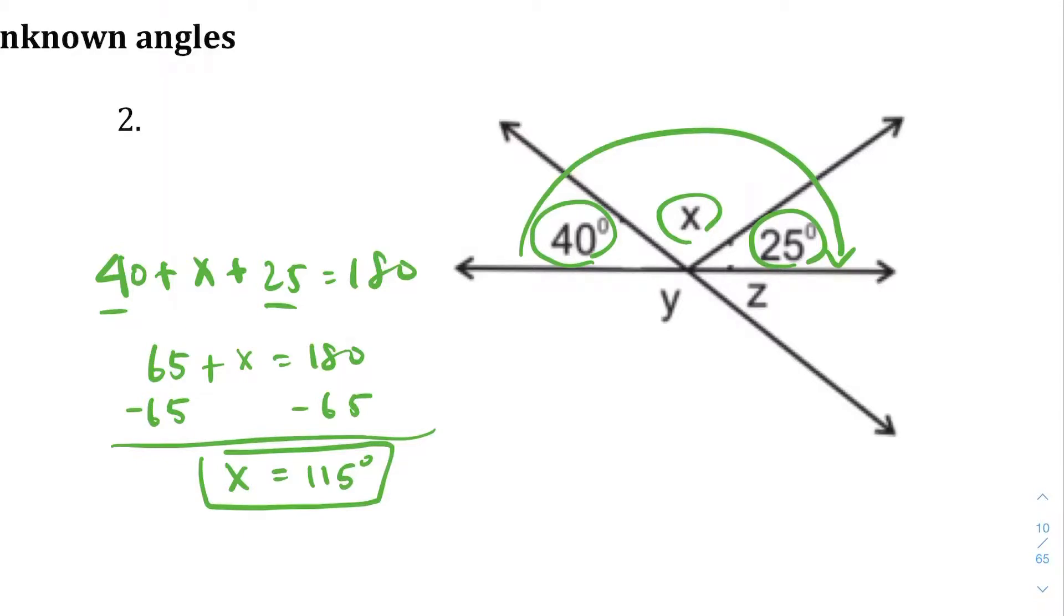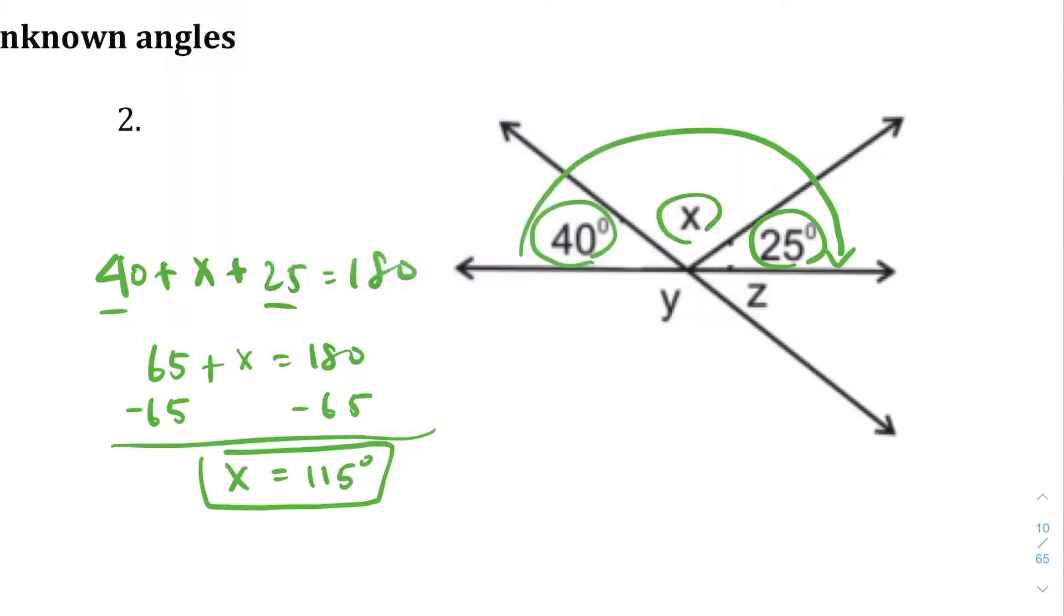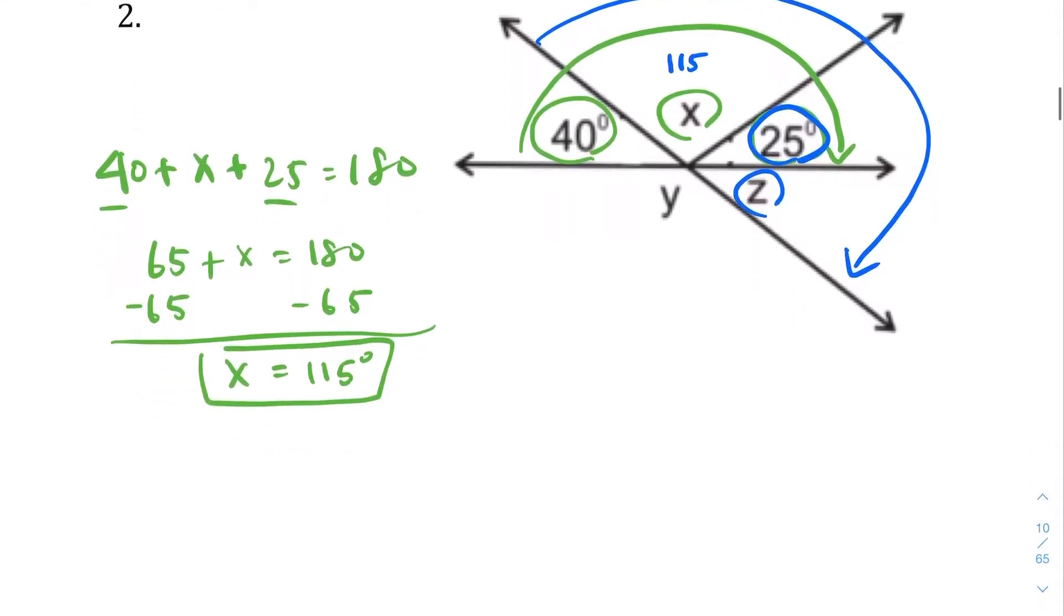Now that we know what x equals, let me change color here. We can find out what z equals. Since x is 115, this is 25, and z is what we're trying to find. Let's set up another equation. 115 + 25 + z is going to also equal 180 degrees. Let's combine these like terms. I end up with 140 + z equals 180. I'm going to subtract 140 from both sides. You end up with z equals 40 degrees.